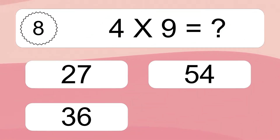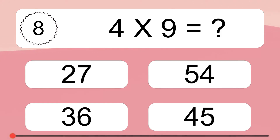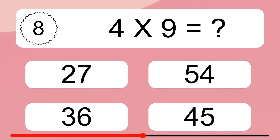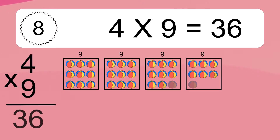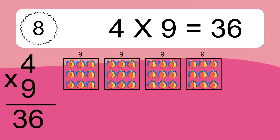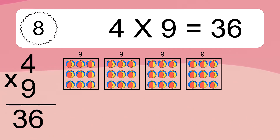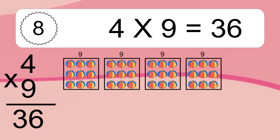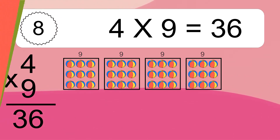Four times nine equals what? Four times nine equals 36. We have four boxes, and each box has nine colorful balls inside. If you count all the balls in all the boxes together, you will have four times nine balls. This equals 36 balls.